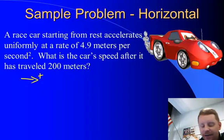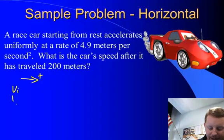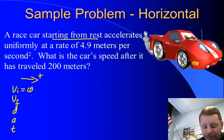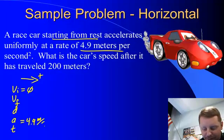Next up, we make our table: VI, VF, D, A, and T. And it says the car starts from rest. If it starts from rest, its initial velocity must be zero. It accelerates at 4.9 meters per second squared, so A must be 4.9 meters per second squared.